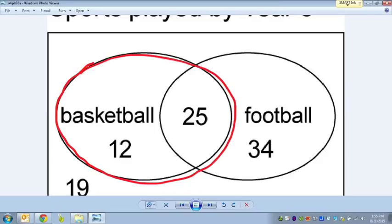But when you ask the question how many people like basketball, it's not just 12, because there's 25 people who overlap with football. But you need to include the 12 with the 25.